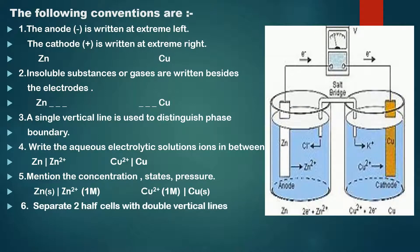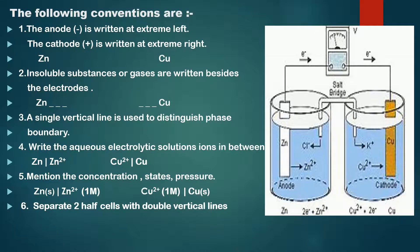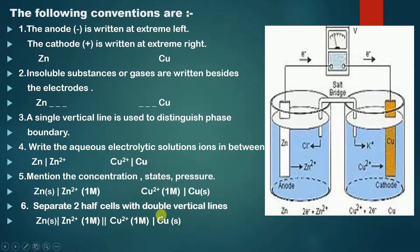The sixth convention states that we separate the two half cells with double vertical lines. This is our first half cell and this is our second half cell. The cell formulation for the left half cell is written on the left-hand side and for the right half cell on the right-hand side. We simply separate both of these with a double vertical line. We write each half cell as it is, just separated by the two vertical lines.